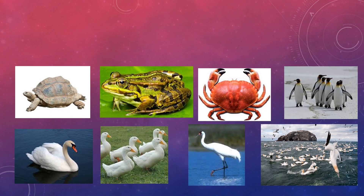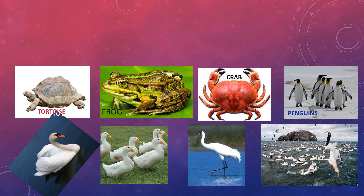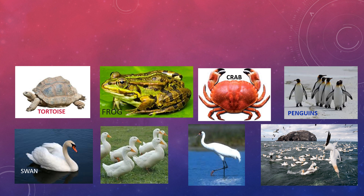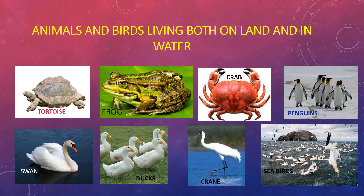Another set of animals: fish, tortoise, frog, crab, penguins, swan, ducks, crane and sea birds. These animals can live both on land and in water. Tortoise, frog, crab, penguin, swan, duck, crane and sea birds — these animals can live both on land and in water.